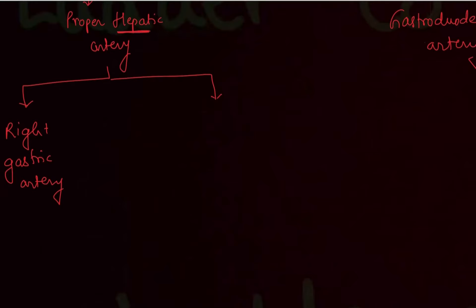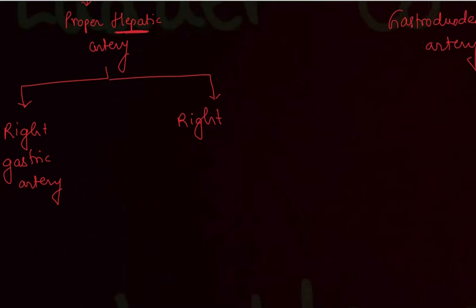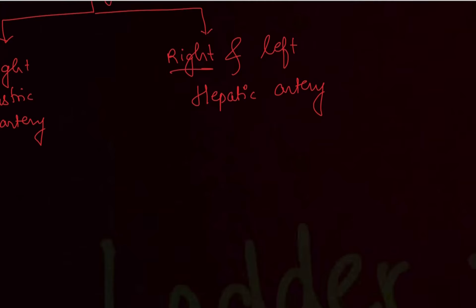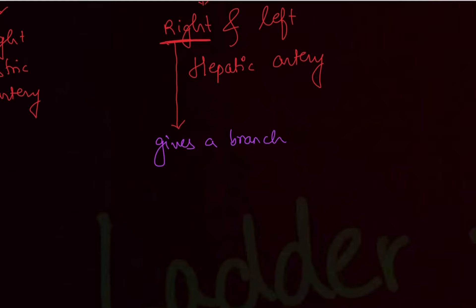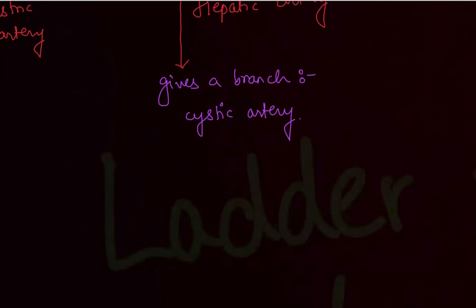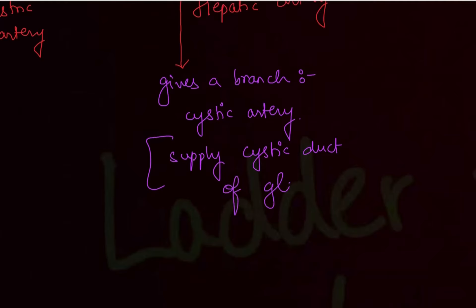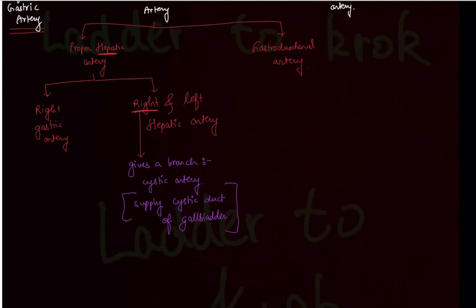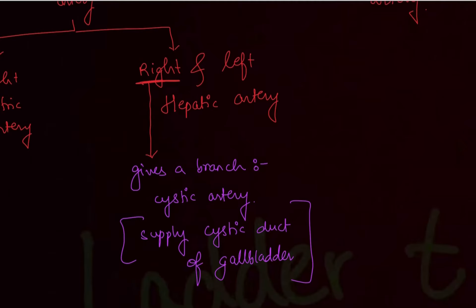The second branch of the proper hepatic artery is very important. Since the proper hepatic artery goes solely to the liver, it gives right and left hepatic arteries. The right hepatic artery supplies the right lobe of the liver, and the left hepatic artery supplies the left lobe. The right hepatic artery also gives one very important branch: the cystic artery, which supplies the cystic duct of the gallbladder.